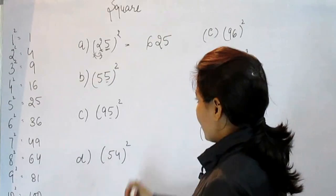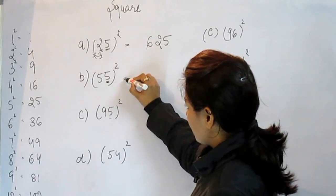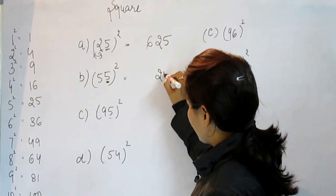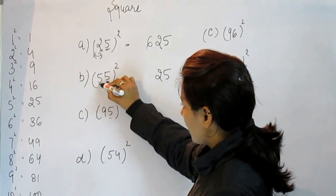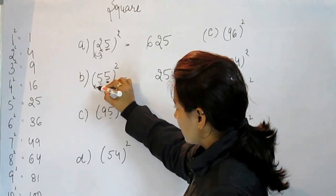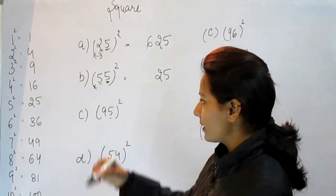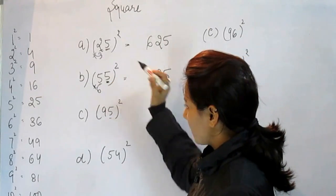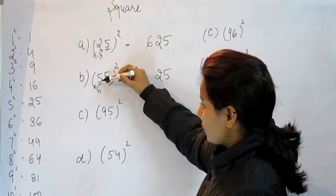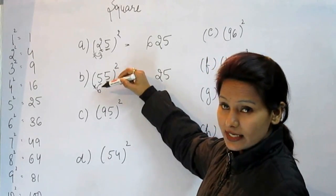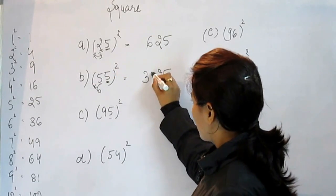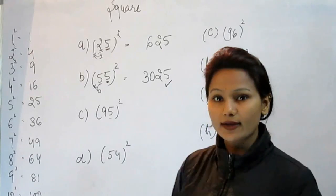In next case, 5 into 5 is 25. And what comes after 5? That is 6. So 5 into 6 is equal to 30. This is the answer.